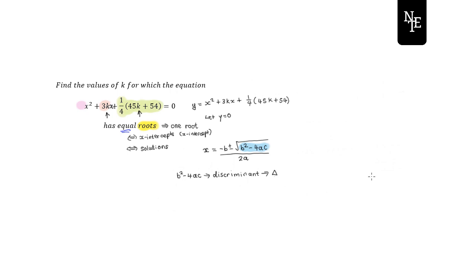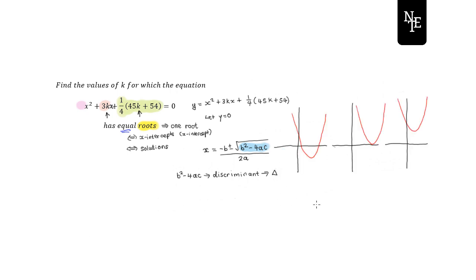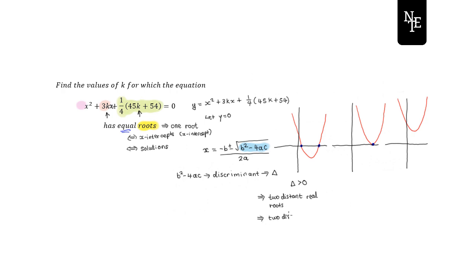There are three different situations. In the first case, the discriminant is greater than zero — when it's positive, we say the quadratic has two distinct real roots, meaning two distinct x-intercepts on the graph.